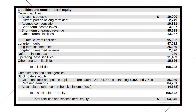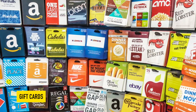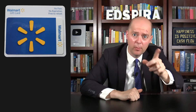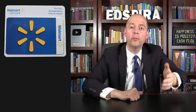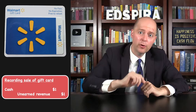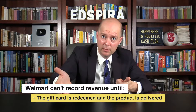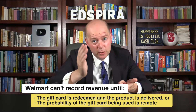Some companies have a substantial amount of unearned revenue. If we take a look at Microsoft's balance sheet, for example, we can see the company had $45 billion of unearned revenue listed among its current liabilities as of June 30, 2022. Do you know what else creates unearned revenue? When companies sell gift cards. Walmart would record the cash received and unearned revenue when the gift card is sold, but Walmart can't record revenue until the gift card is redeemed and the product or service is delivered, or the probability of the gift card being redeemed is remote.